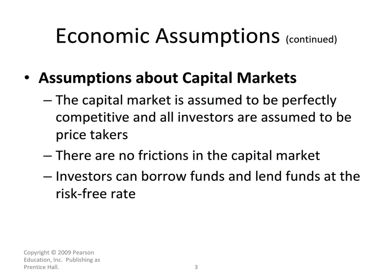Assumptions about the capital markets used in Capital Market Theory are that capital markets are perfectly competitive — no one can influence the capital markets. The capital markets don't have any frictions, which would include transaction costs, bundling of assets, or size limits on what you can purchase and sell. For example, if you purchase stock, in most cases you have to purchase 100 shares or face considerable transaction costs.